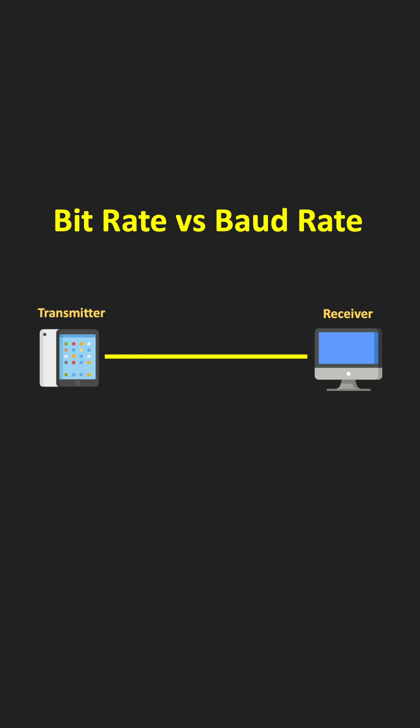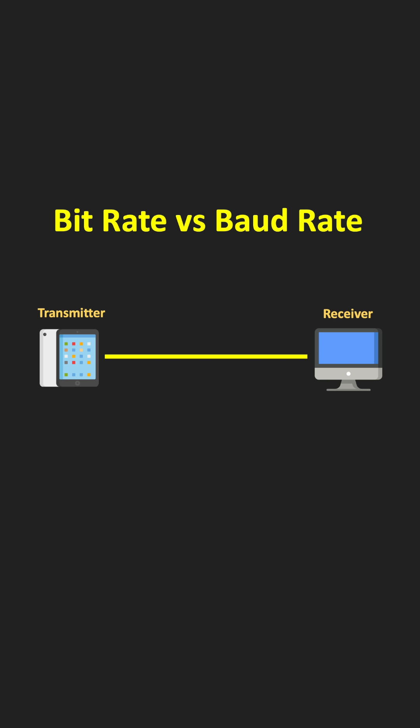The bit rate and the baud rate are two terms commonly used in digital communication to describe the speed of data transmission. Often, people get confused between the two terms. So in this short video, let us understand the difference between the two terms.